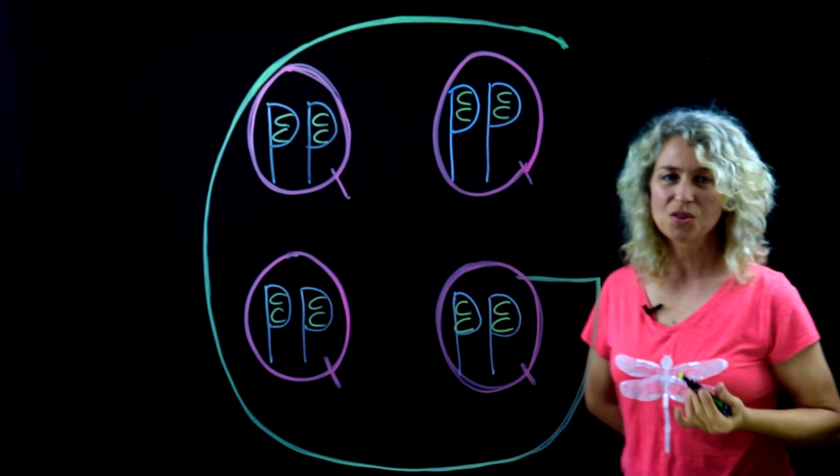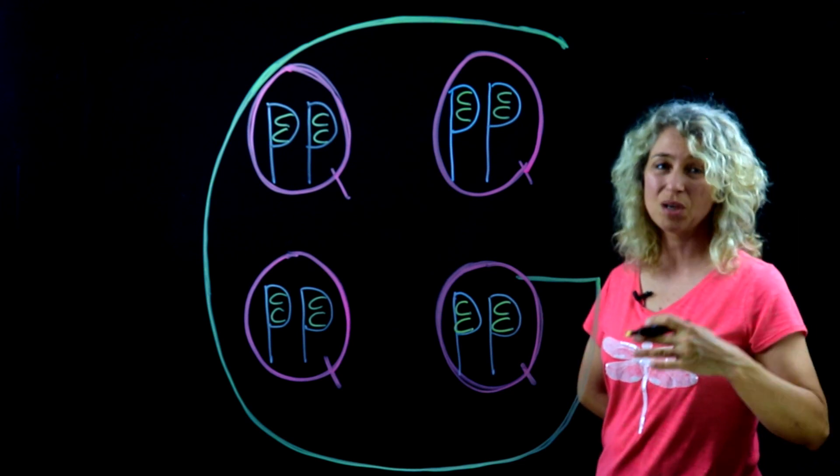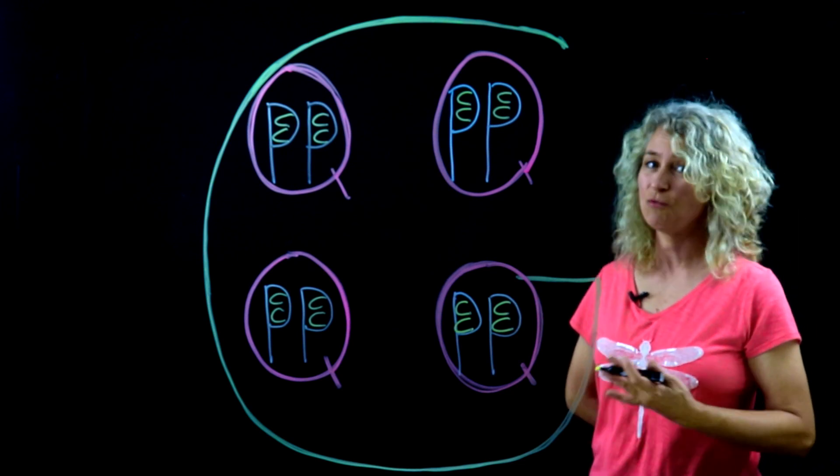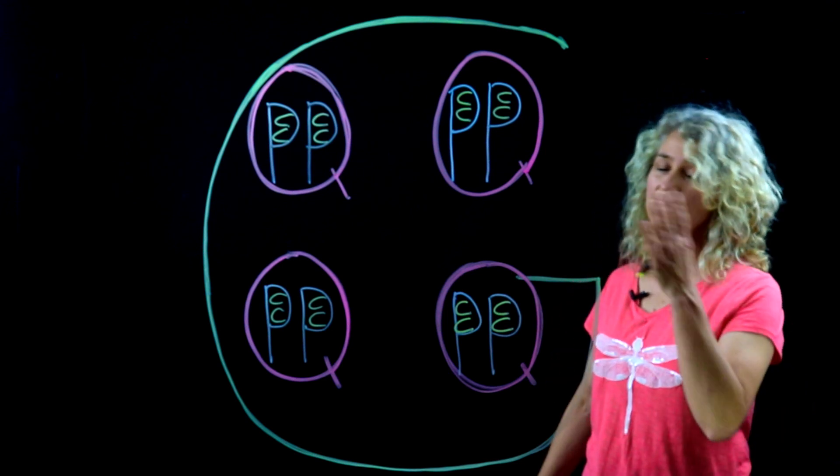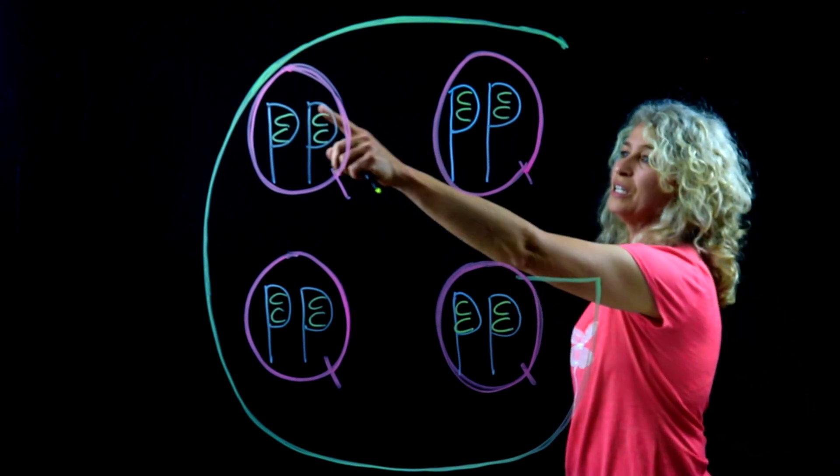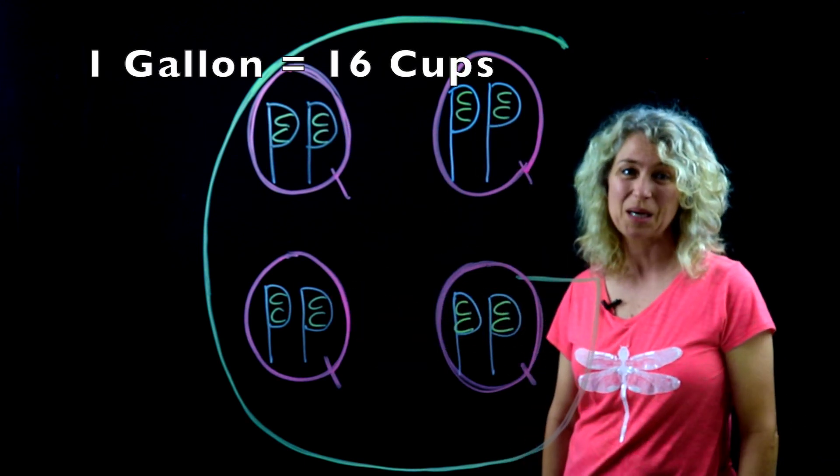The cool thing about this is if you try drawing it yourself, you'll remember it. You can quickly sketch it out. If you have a question on a test that says how many cups are in a gallon, you can visualize: two, four, six, eight, ten, twelve, fourteen, sixteen. There are sixteen cups in a gallon.